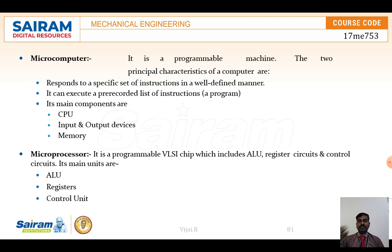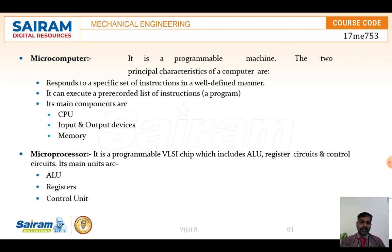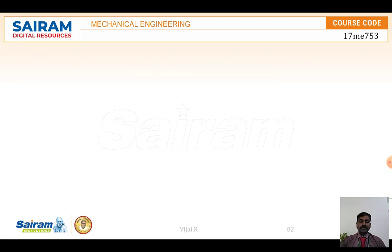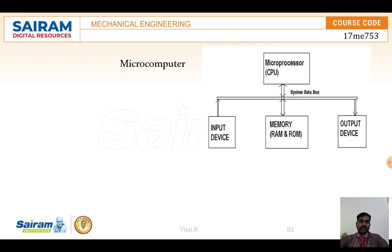The microcomputer has the microprocessor as one of its units, and it connects with input and output devices. It takes information from input devices, stores it in memory, and then sends the data for processing. The components we are going to see are input devices, memory, output devices, and the CPU — the microprocessor is part of the microcomputer.